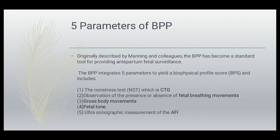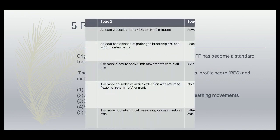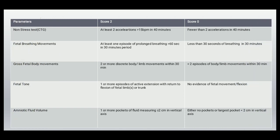The five parameters are: first, the non-stress test which is CTG; second, observation of the presence or absence of fetal breathing movements; third, gross body movements; fourth, fetal tone; and fifth, ultrasound measurement of AFI. We combine all these five things to calculate the score.